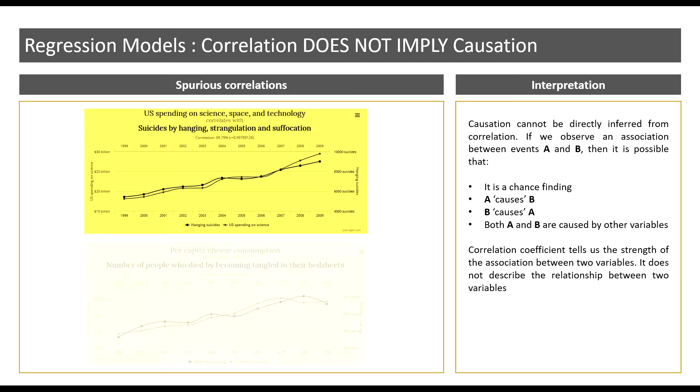Here we have cheese consumption versus the number of people who die by becoming entangled in their bedsheets. This is again very ridiculous. This is obviously another chance finding.